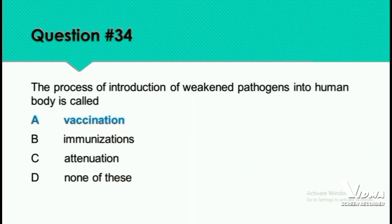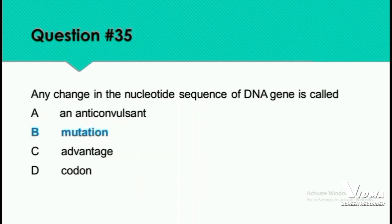Question 34: The process of introduction of weakened pathogens into the human body is called vaccination, immunization, attenuation, or none of these? This process is called vaccination, through which we get immunity against a particular disease. Question 35: Any change in the nucleotide sequence of a DNA gene is called a mutation.